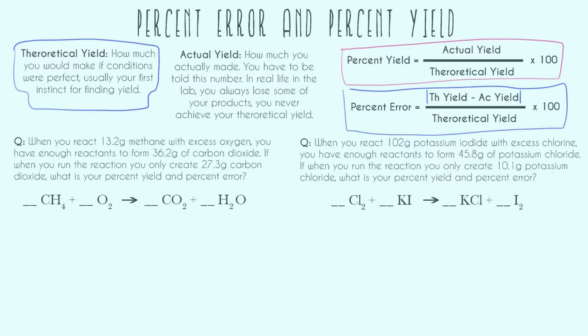And then we have our actual yield, which is how much you actually made. So you have to be told this number. However, in real life, you're in the lab and you always lose some of your products. You never actually achieve your theoretical yield.